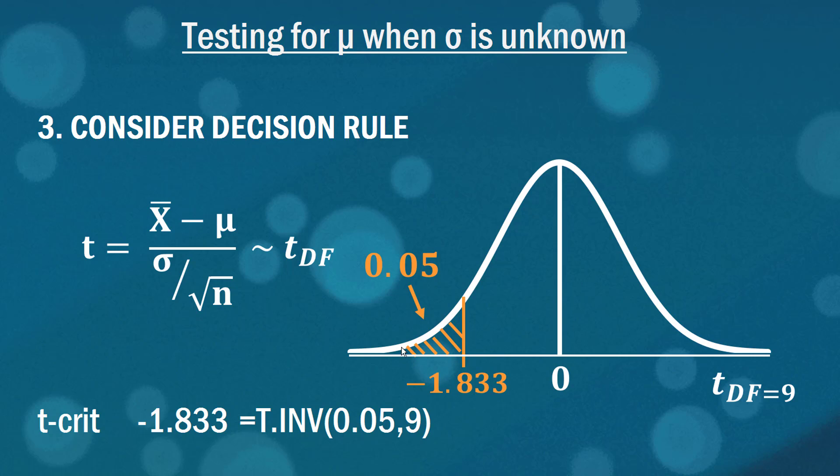The area to the left that we're interested in is 0.05 and of course we also need to tell it how many degrees of freedom we want. If you put this formula into Excel you'll get minus 1.833.